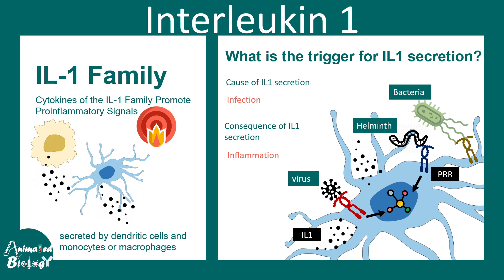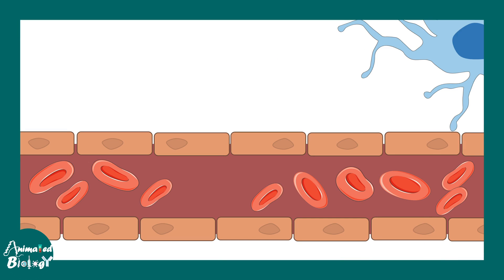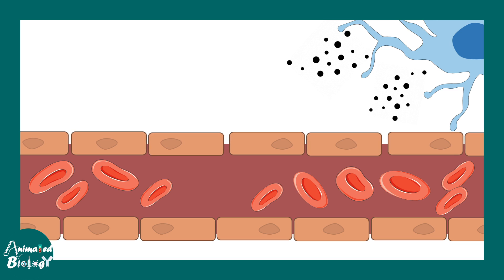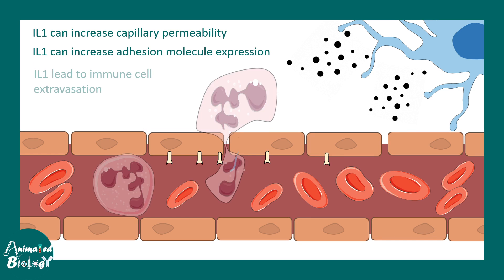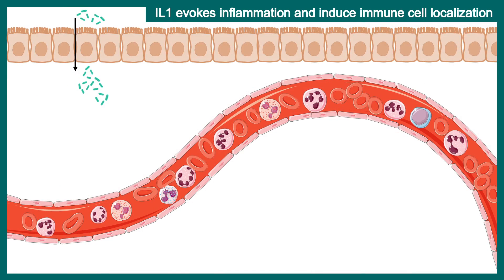Once secreted, interleukin 1 can modify the capillary endothelial cells and change vascular permeability. The capillary endothelial cells become more permeable, allowing things to move out of the blood vessels. The adhesion properties of these endothelial cells are also altered. Overall, several immune cells such as neutrophils try to escape the blood vessel and reach the site of infection. This is one of the most important functions of IL-1: it evokes inflammation and attracts more immune cells.